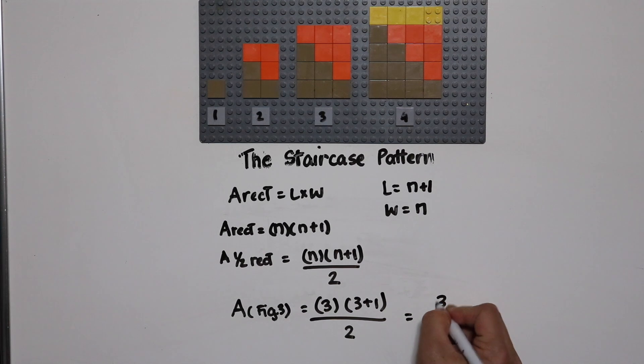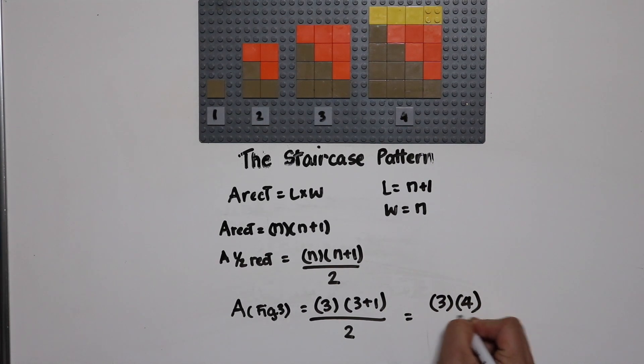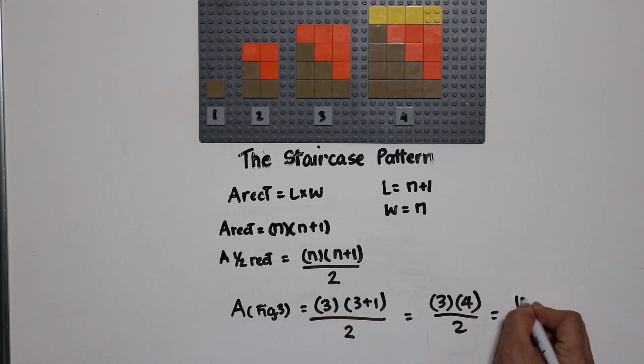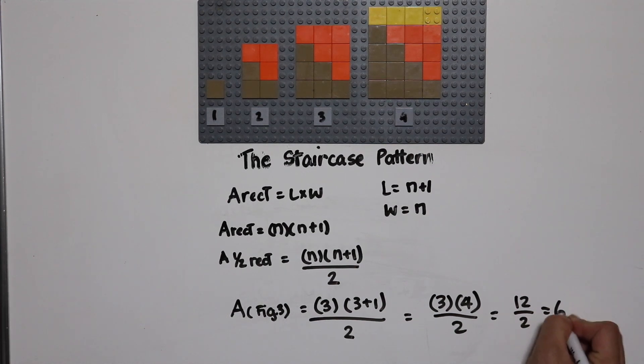And that would be three times four divided by two, which is 12 divided by two, which is six.